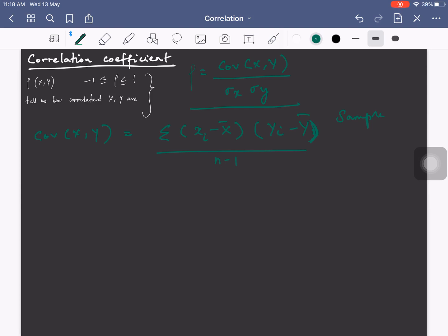If I use this in my correlation coefficient formula, rho is equal to sigma x i minus x bar times y i minus y bar by n minus 1, divided by sigma x and sigma y. The reason I split it out is because you'll see that in a moment.